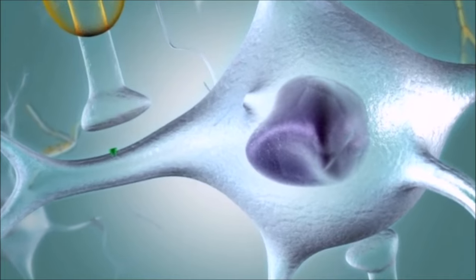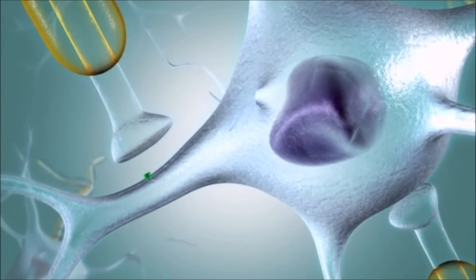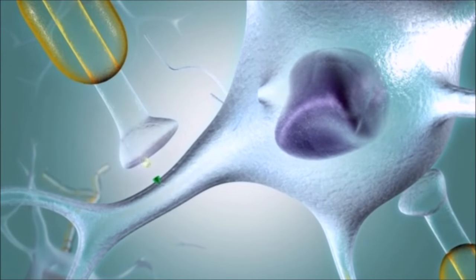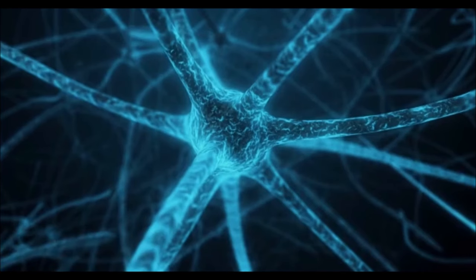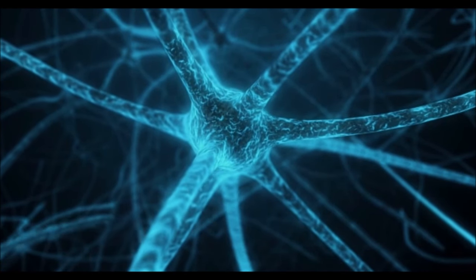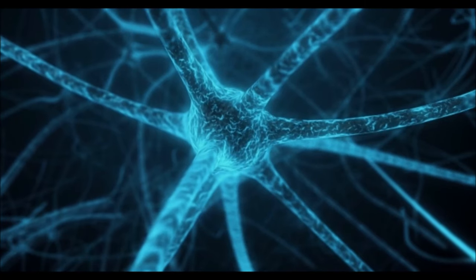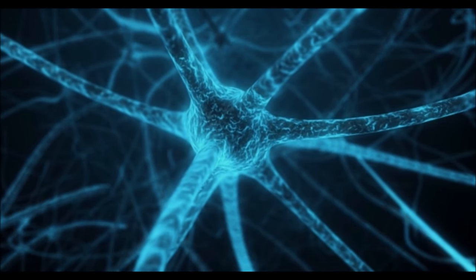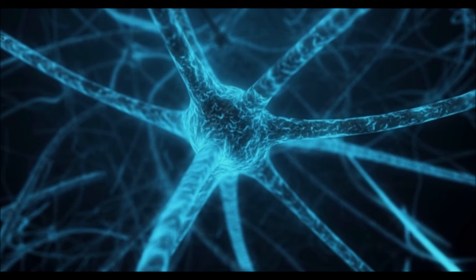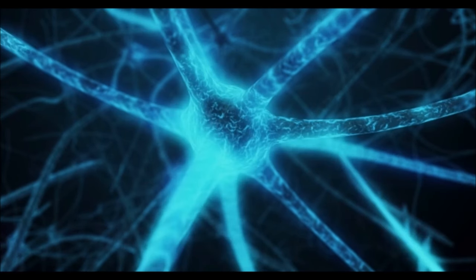The soma is the central part of a neuron, typically round or oval in shape. The neuron's nucleus, cytoplasm, and many organelles are found within the soma. The soma serves as a center where proteins and other molecules necessary for the neuron's survival and functions are synthesized and transported.